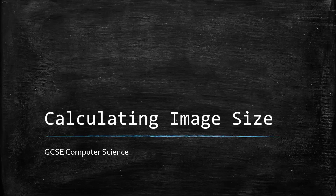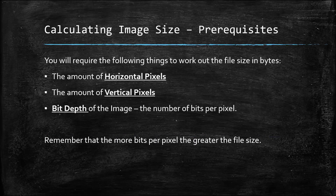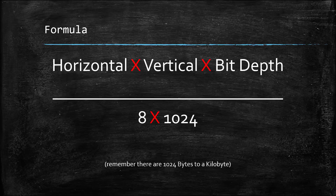In today's video we're going to be looking at calculating image size and some AQA GCSE exam questions. To calculate image size you need to know the amount of horizontal pixels, the amount of vertical pixels, and the bit depth, also referred to as color depth. Remember that the more bits per pixel, the greater the file size. The formula is: horizontal pixels times vertical pixels times bit depth, divided by 8 times 1024. There are 8 bits in a byte and 1024 bytes in a kilobyte.